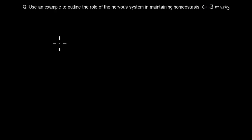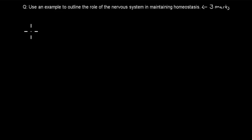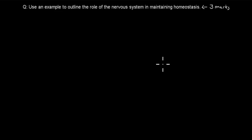Welcome to one of the past HSC exam question videos. In this video, I'm going to cover one of the past HSC exam questions on the Activity and Temperature chapter. I'll read the actual question, and once I've read it, I'll give you guys about 5 seconds to pause the video and attempt the question. The question says: Use an example to outline the role of the nervous system in maintaining homeostasis.